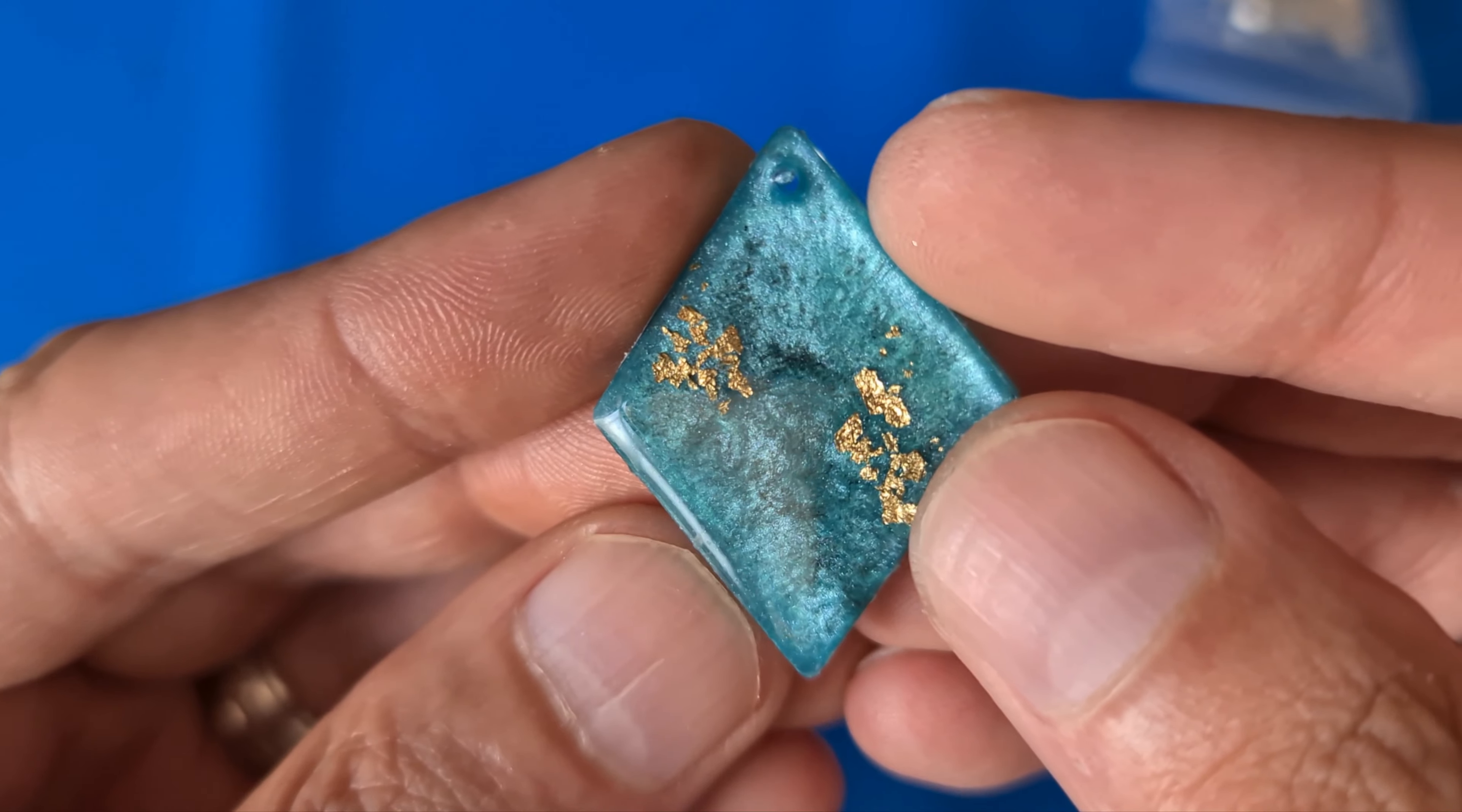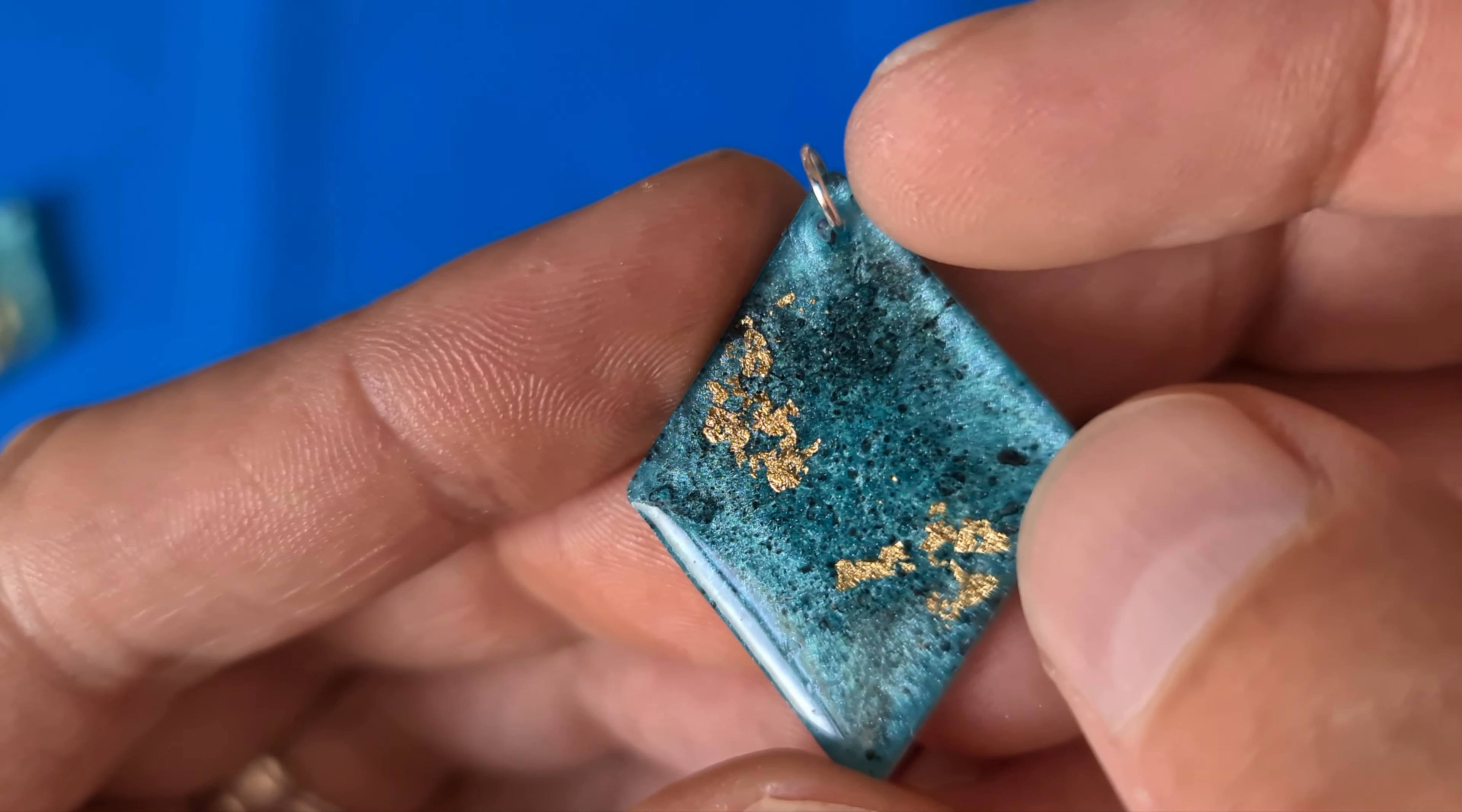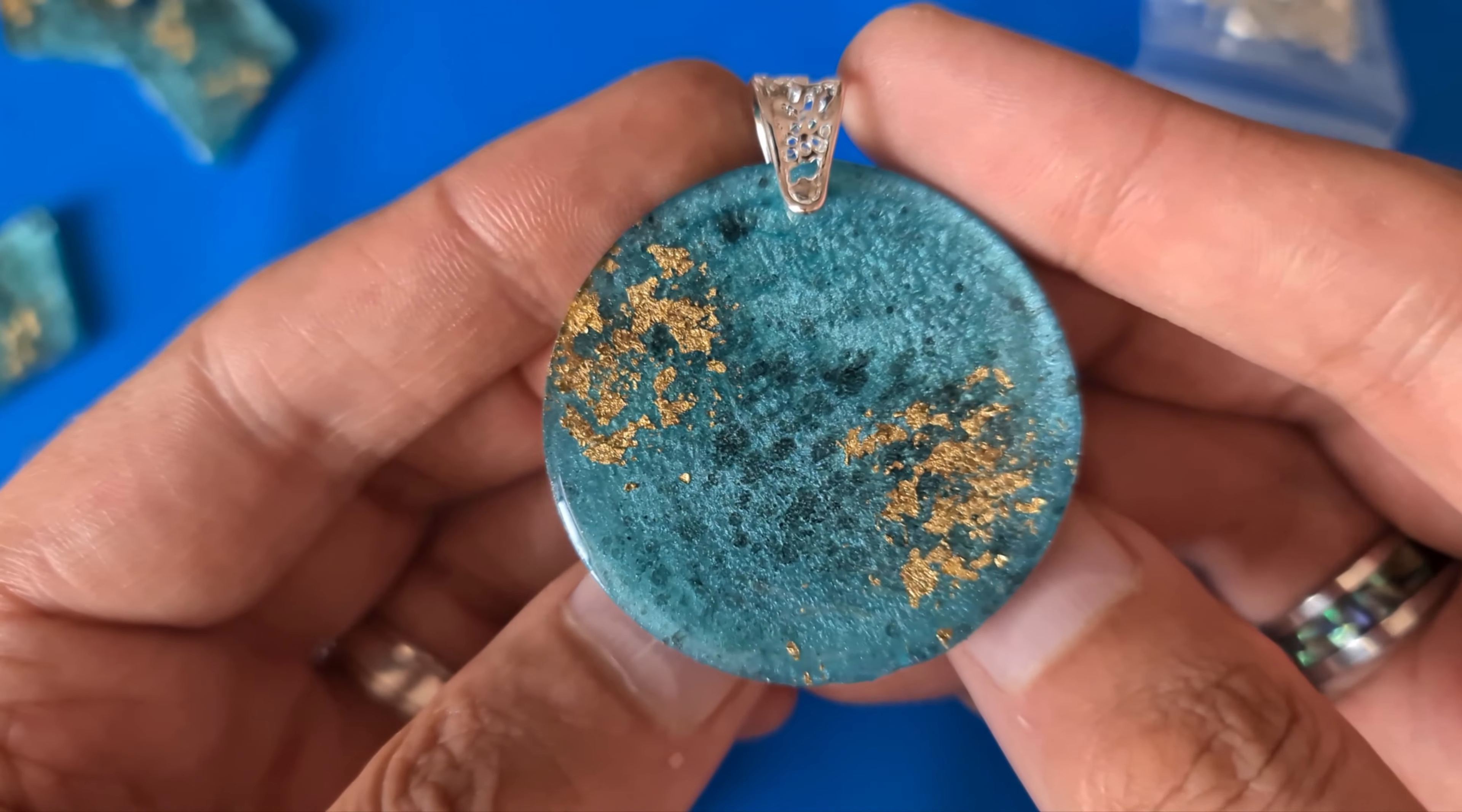This one is heavier with the mica powder, but you can see the effect. Again, you can make matching earrings. For the pendant, I just drilled a hole through the top, attached my bow, so that is ready to dress onto a necklace. Really cool, pretty simple pieces to make really. Again, you can just do these any color you want.